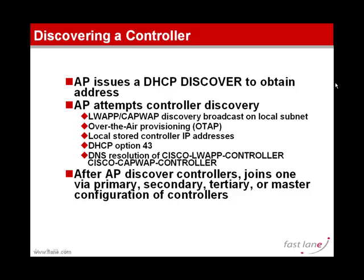The access point can also get information from a DNS server, which means it needs to know a DNS server — typically received via DHCP Option 6. If it knows a DNS server, it will try to resolve the name cisco-lwapp-controller. If you run 5.2 code, it will try to resolve both cisco-lwapp-controller and cisco-capwap-controller.